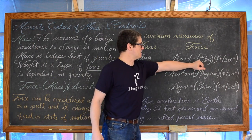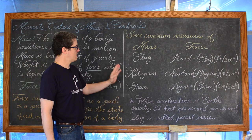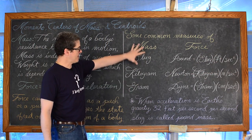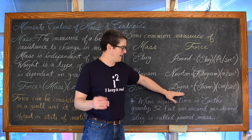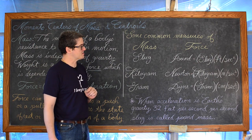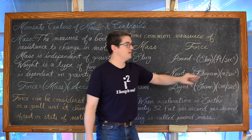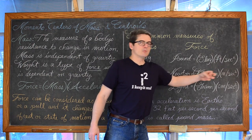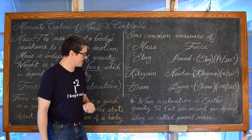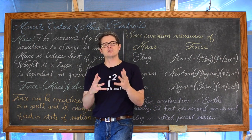Some common measurements of mass and force: if mass is measured in slugs, then force in pounds equals slugs times feet per second squared. If mass is in kilograms, then a newton equals kilograms times meters per second squared. If mass is in grams, then force in dynes equals grams times centimeters per second squared. A newton is the force required to produce an acceleration of one meter per second squared on a mass of one kilogram. When acceleration is Earth's gravity — 32 feet per second per second — a slug is called pound-mass.